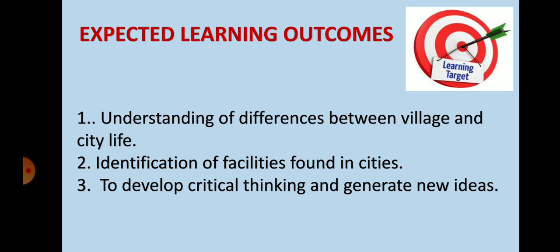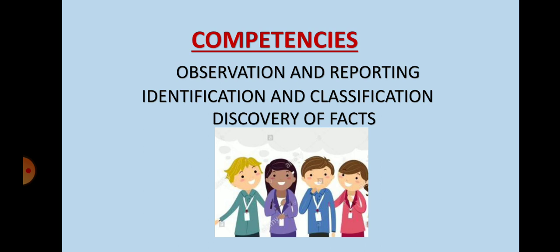The expected learning outcomes of today's class are: understanding of differences between village and city life, identification of facilities found in the cities, and to develop critical thinking and generate new ideas. The competences covered here are observation and reporting, identification and classification, and discovery of facts.